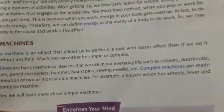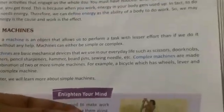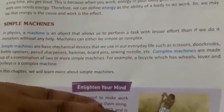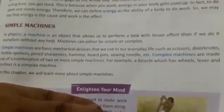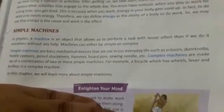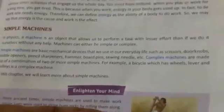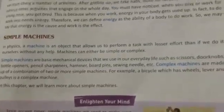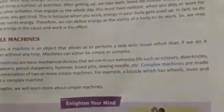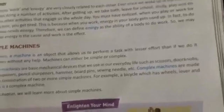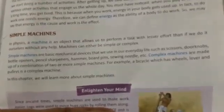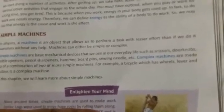Next is simple machines. In physics, a machine is an object that allows us to perform a task with lesser effort than if we do it ourselves without any help. Machines can either be simple or complex. Simple machines are basic mechanical devices that we use in our daily life, such as scissors, door knobs, bottle openers, pencil sharpeners, hammers, board pins, and sewing needles.